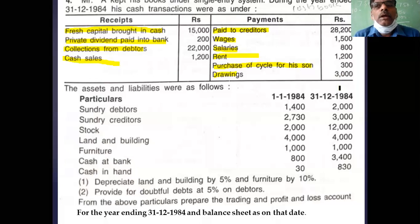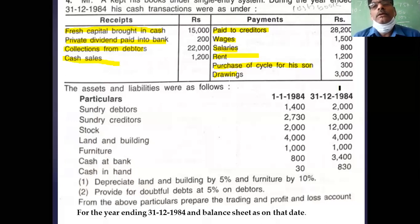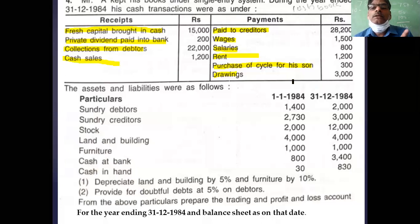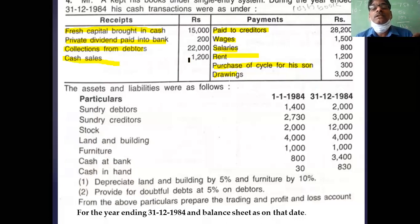Regarding the cash flow statement — is it a cash book or just a statement of receipts and payments? If it is a cash book, it starts with an opening balance and ends with a closing balance. Since opening and closing balances are not given here, this is not a cash book — it is only a statement. You have to rewrite it as a cash book, starting with the opening balance and ending with the closing balance.